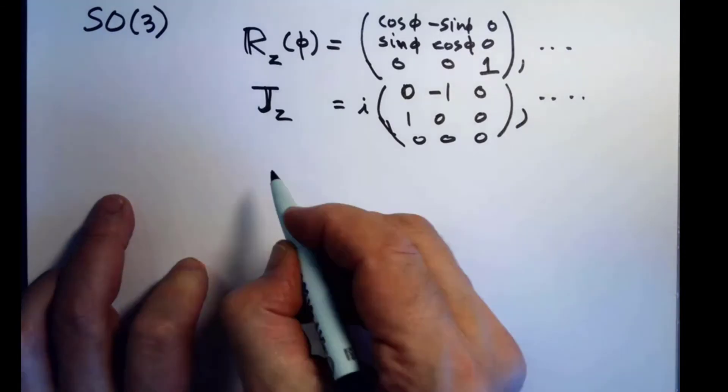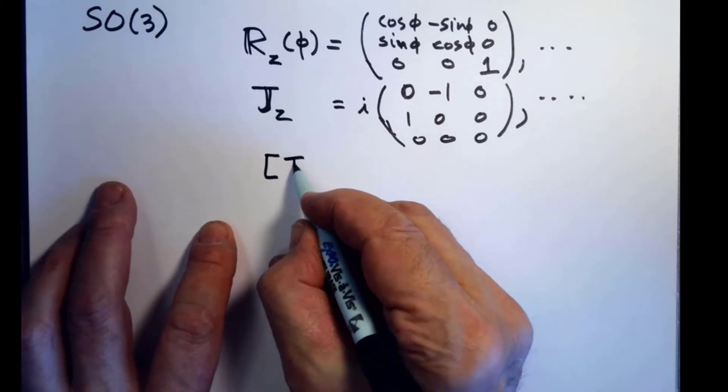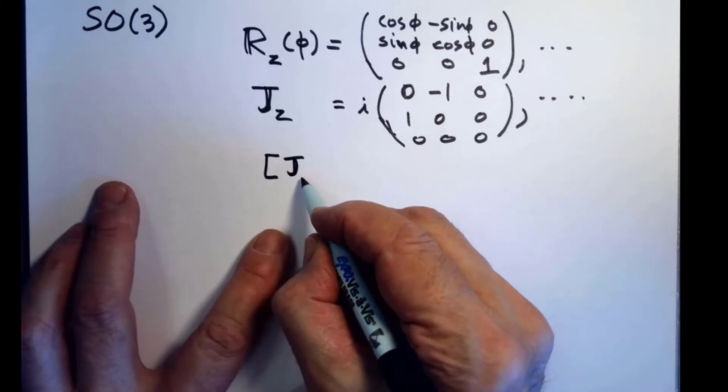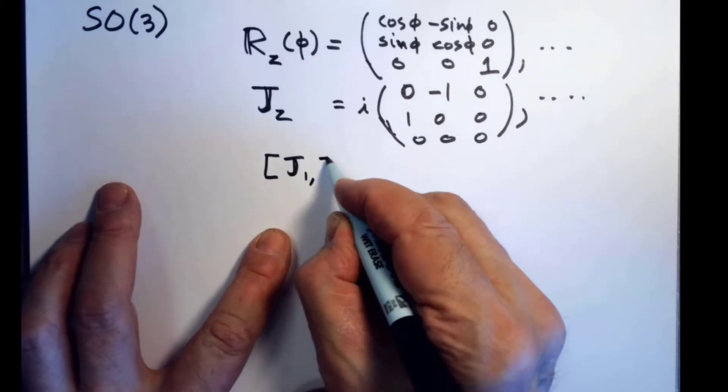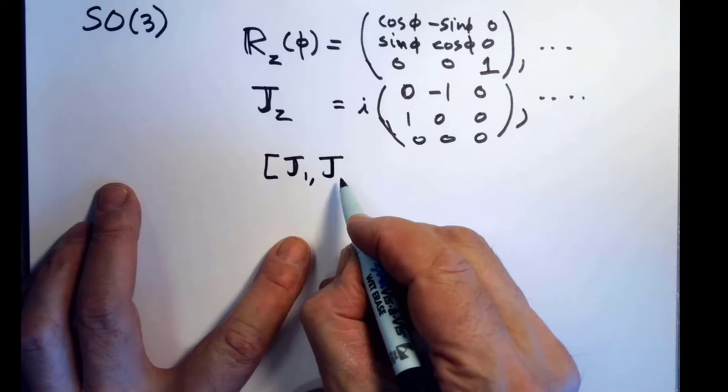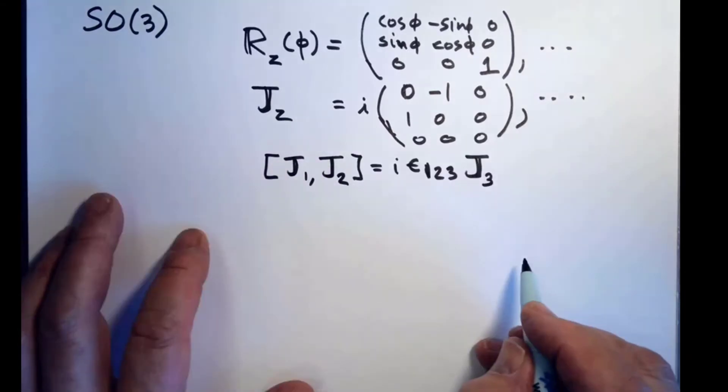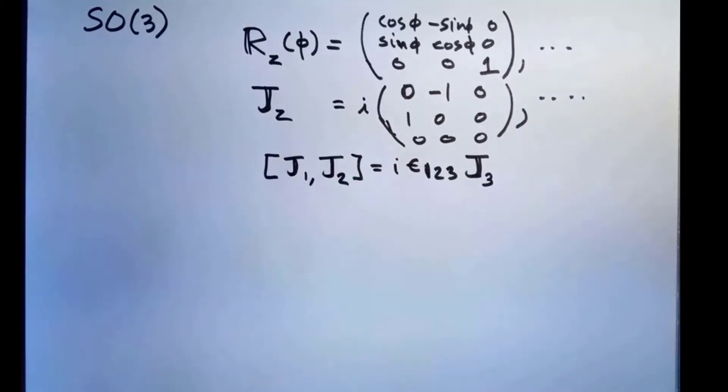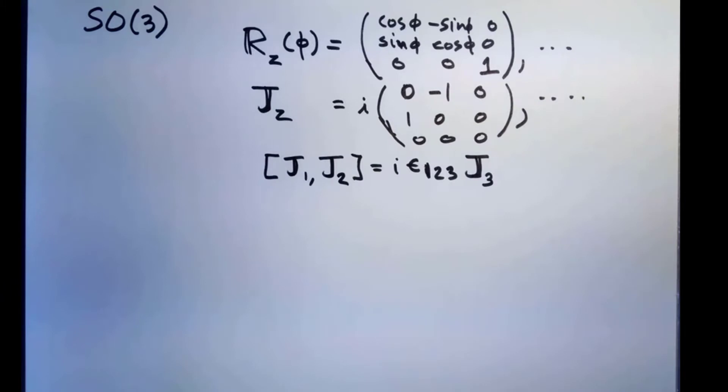But these guys don't commute. And the big deal was to discover that j, and I'll use numbers because Levi-Civita indices are nicer written in numbers. So, by calculation, you verify that the commutator of these two generators is actually rotation around the third axis. By symmetry, you can just put ijk's every place here. So, there was SO(3).